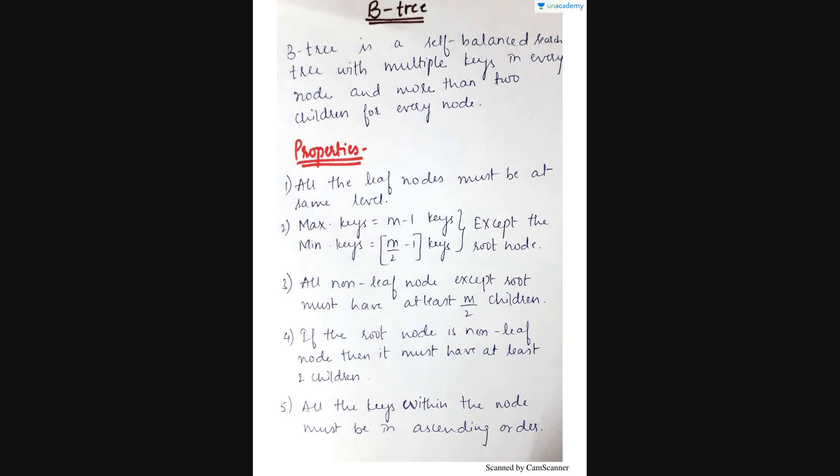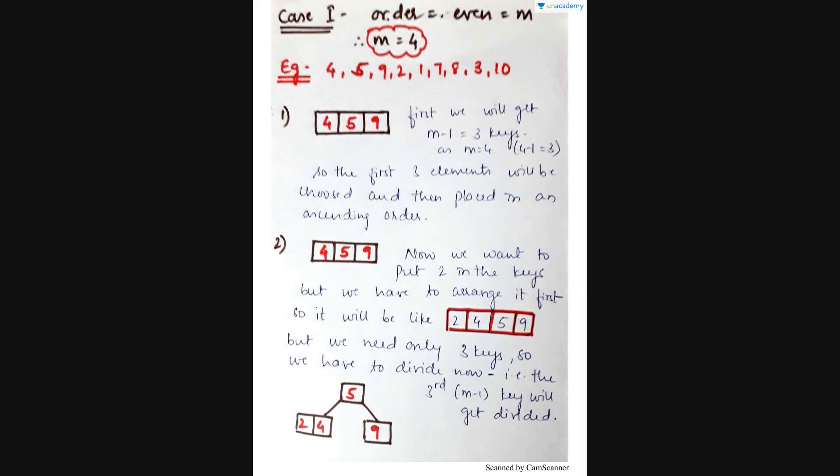I hope this concept will be better understood with the help of some examples. So let's move on to the examples. Before I take the examples I would like to say that this B-tree has two cases. One is order even and case 2 is for order odd. So now we will be seeing case 1.